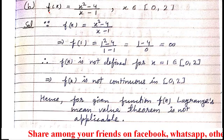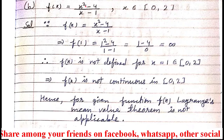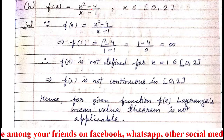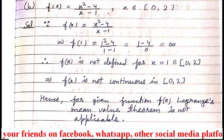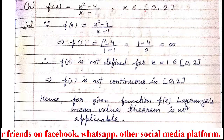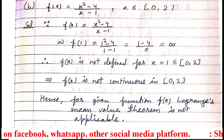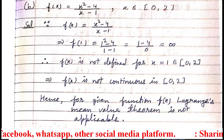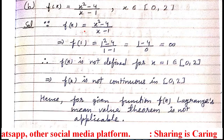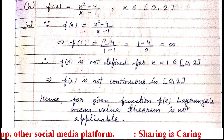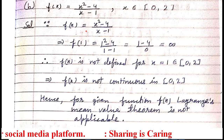In part B, the function is f(x) = (x² - 4)/(x - 1), where x belongs to the closed interval [0, 2]. We have to verify Lagrange's mean value theorem.